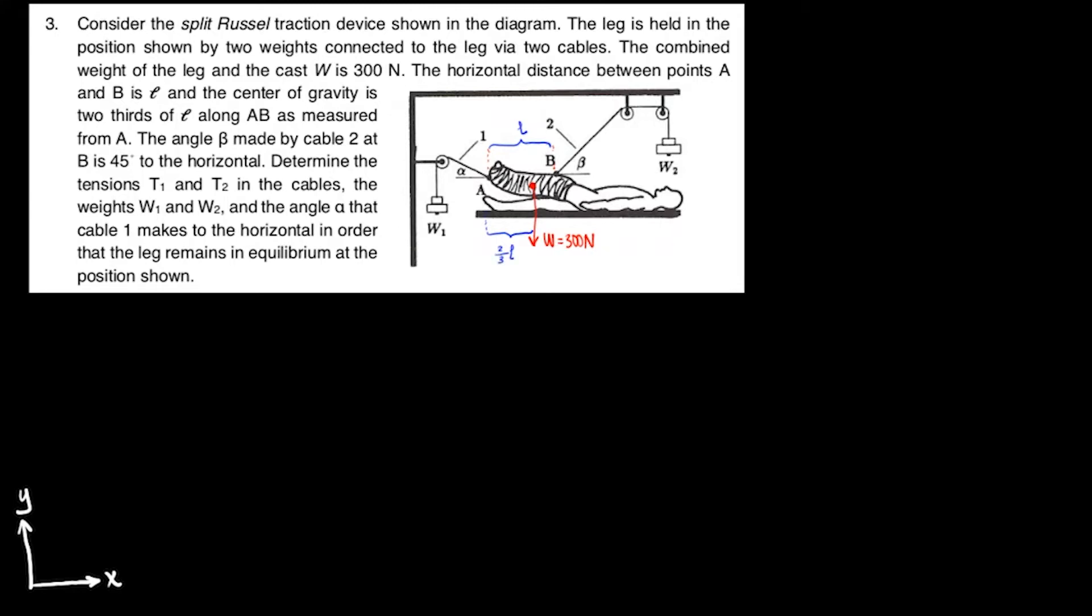The angle beta made by cable 2 at B is 45 degrees to the horizontal. Determine the tensions T1 and T2 in the cables, the weights W1 and W2, and the angle alpha that cable 1 makes to the horizontal in order that the leg remains in equilibrium at the position shown.